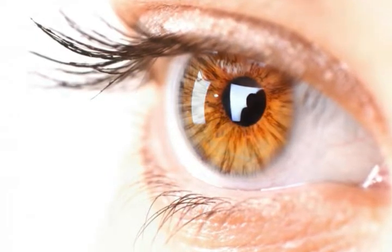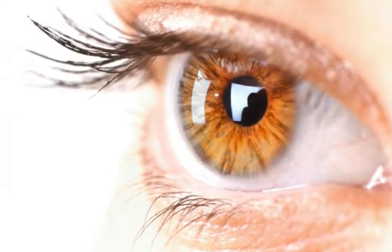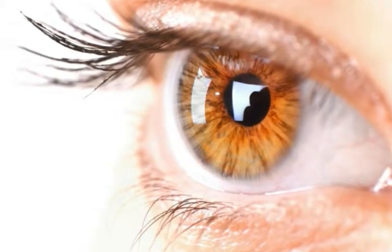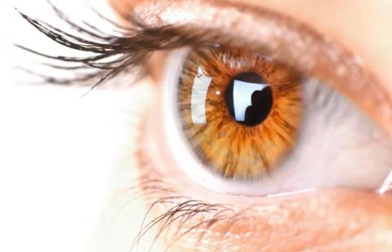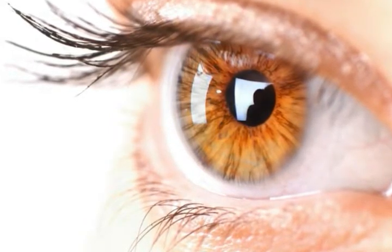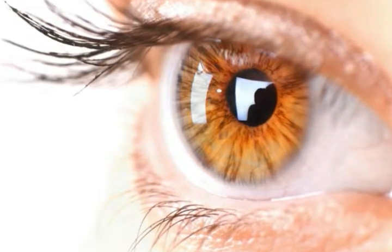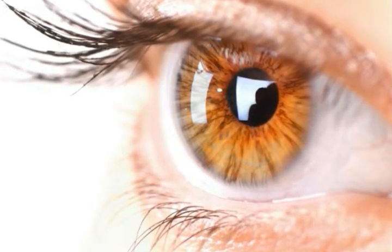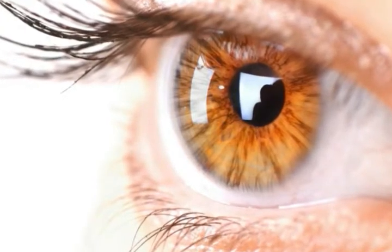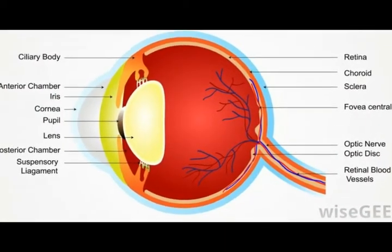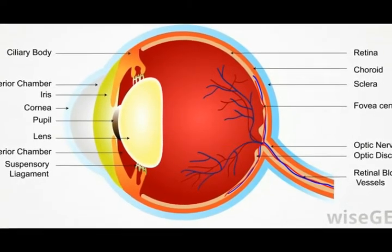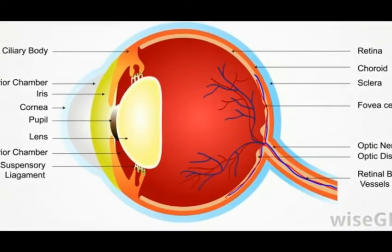In eye anatomy, the ora serrata marks the boundary between the retina and the ciliary body. The retina is the light-sensitive portion of the eye that responds to light allowed to filter through the pupil. In total, the retina makes up about 70% of a globe, with a space provided by the ciliary body, lens, iris, and pupil so that light can be admitted into the eye. At the site where the retina ends and the ciliary body begins, the ora serrata can be observed.